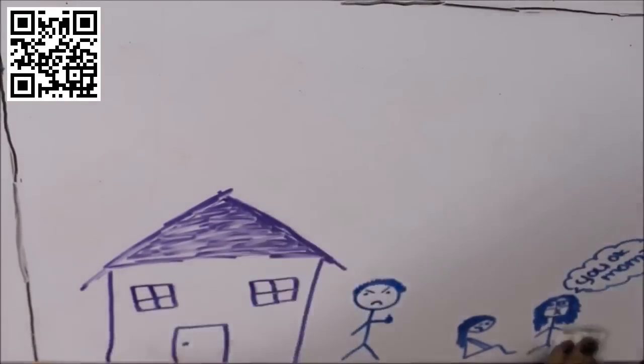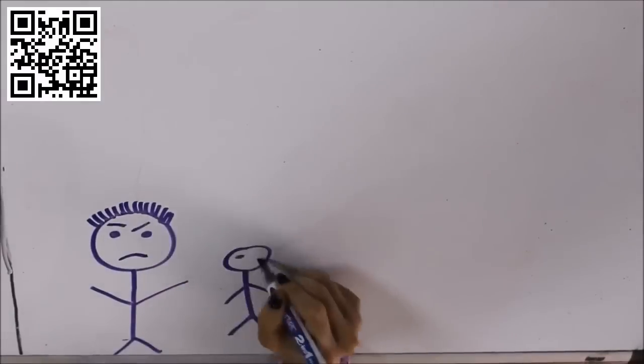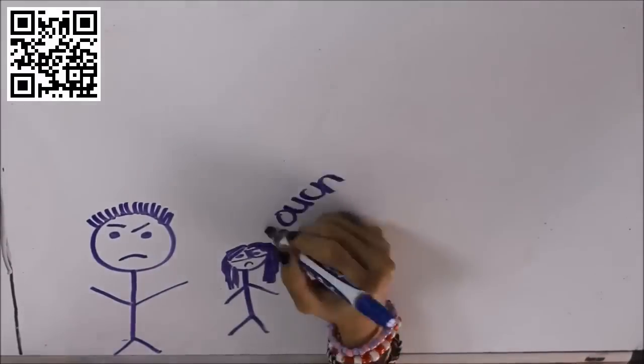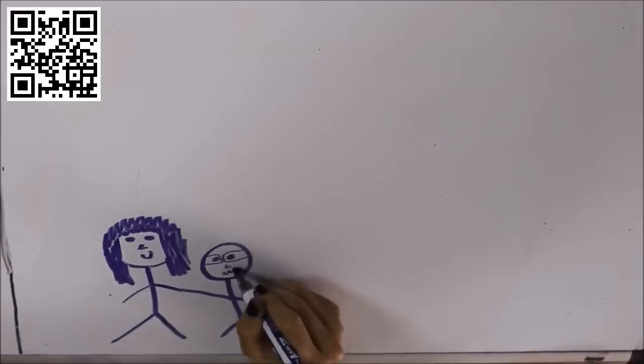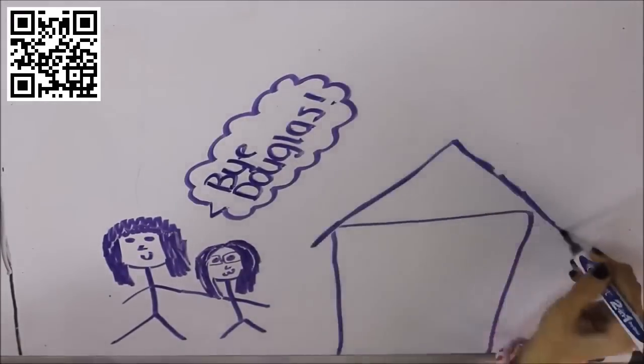But then things at home started getting really bad. My dad became an alcoholic and started abusing my mom, and I was always really worried about her. One day my dad actually hit me and my mom had had enough of it. We decided that it would be best if we left Douglas and went back to Tucson to be with my grandma, grandpa, and my sister again.